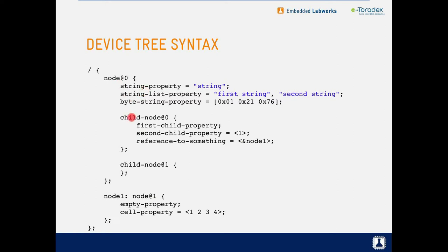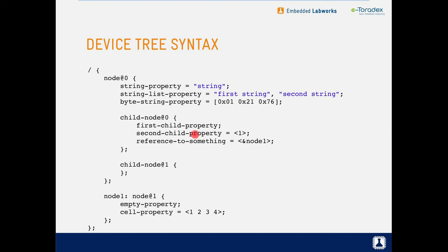Inside nodes, we can put properties and child nodes — that's why it's called a device tree. Properties come in several types: strings, lists of strings (separated by commas), byte arrays (in square brackets), unsigned integers (in angle brackets), and boolean flags. A flag property can be used by the device driver to check if a feature is enabled or not. Nodes can contain child nodes, which can in turn contain further child nodes.